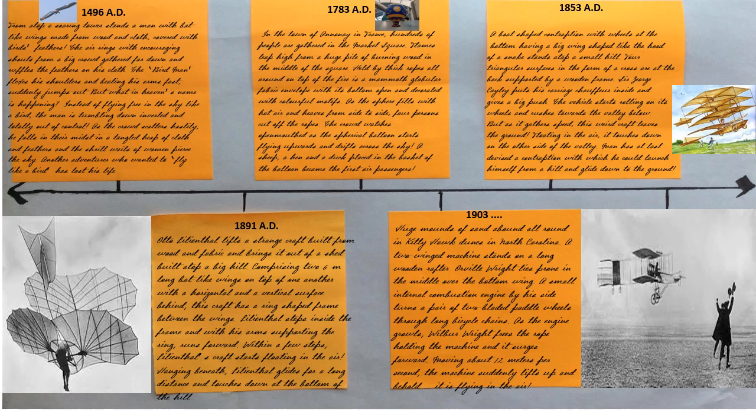1853 A.D. A boat-shaped contraption with wheels at the bottom, having a big wing shaped like the hood of a snake, stands atop a small hill. Four triangular surfaces in the form of a cross are at the back, supported by a wooden frame. Sir George Cayley puts his carriage chauffeur inside and gives a big push. The vehicle starts rolling on its wheels and rushes towards the valley below. As it gathers speed, this weird craft leaves the ground. Floating in the air, it touches down on the other side of the valley. Man has at last devised a contraption with which he could launch himself from a hill and glide down to the ground.